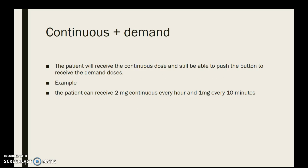The third setting is continuous plus demand. A lot of places use this mostly on oncology floors and ICUs. They tend not to use continuous plus demand unless the patient has really bad pain. The patient gets a continuous dose — so many milligrams or micrograms an hour — and they can also get a demand dose. So the patient gets two milligrams continuous, and then every ten minutes they can get one milligram demand, for a total of up to eight milligrams in one hour.